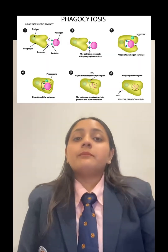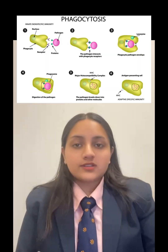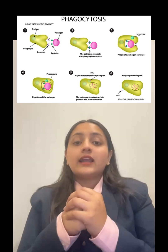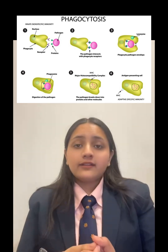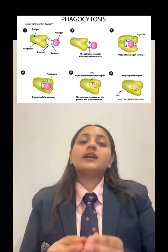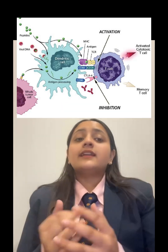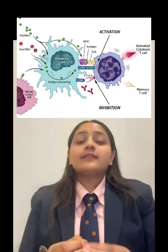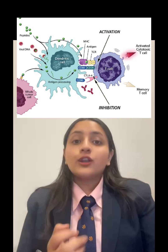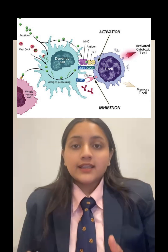The second question is: what roles do macrophages and dendritic cells play? Macrophages act as scavengers — they engulf bacteria and destroy them through phagocytosis and release cytokines to alert other immune cells. Dendritic cells serve as antigen-presenting cells; they migrate to the lymph nodes to activate T cells, linking innate and adaptive immunity.